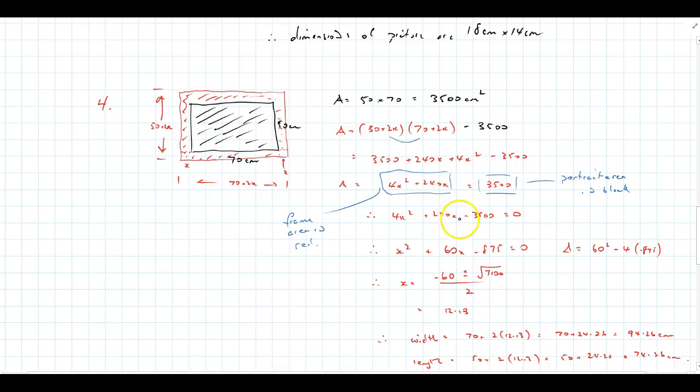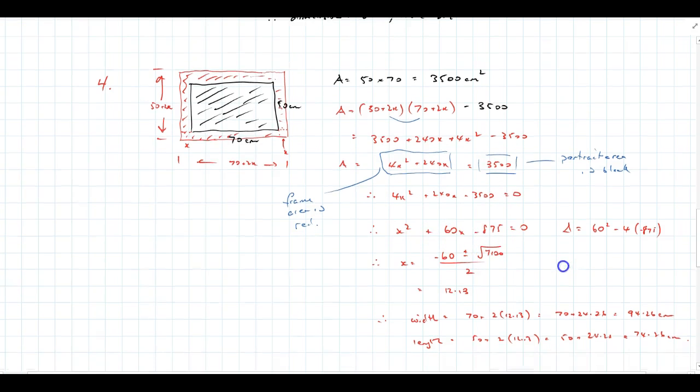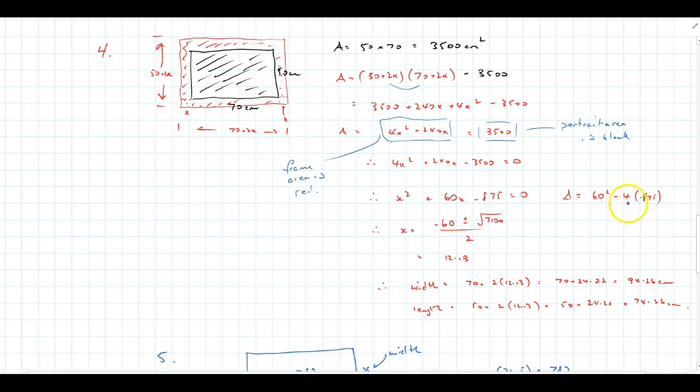So now, bring the 3,500 over, so I've got 0 on the right, I divide by 4, and I get x squared plus 60x minus 875 equals 0. Again, work out the discriminant to be 7,100, and that is not a square number.